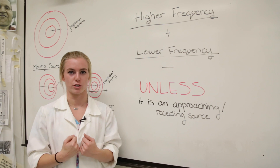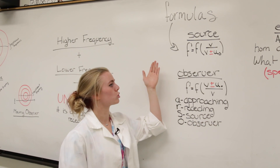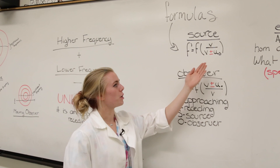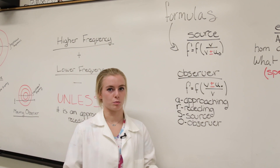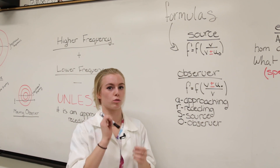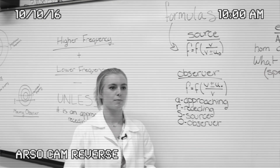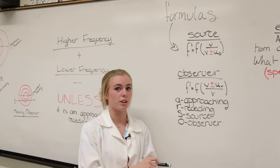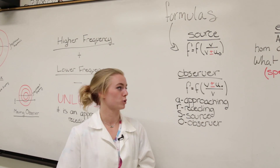And this is where things get tricky. These are the two Doppler formulas: source and observer. Notice the positive or negative — this is why I said things get tricky. It is reversed, which means that what is positive and negative for observer will be negative and positive for source.